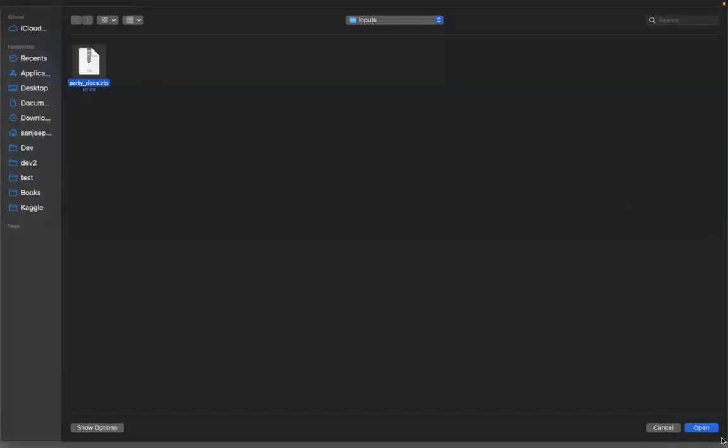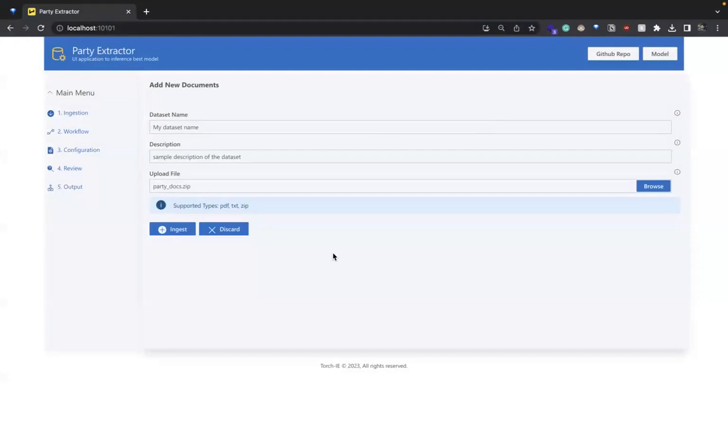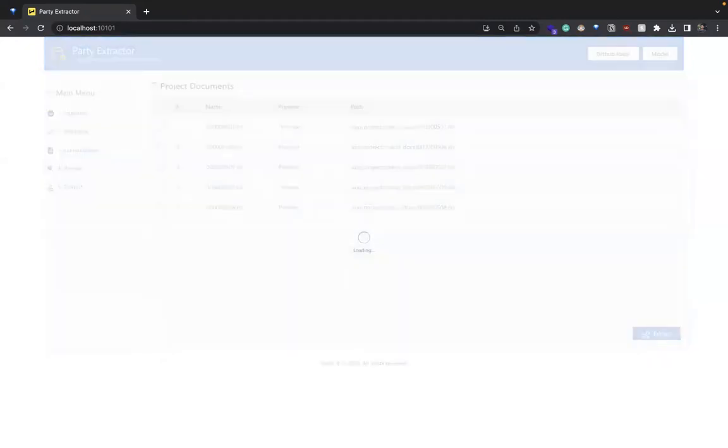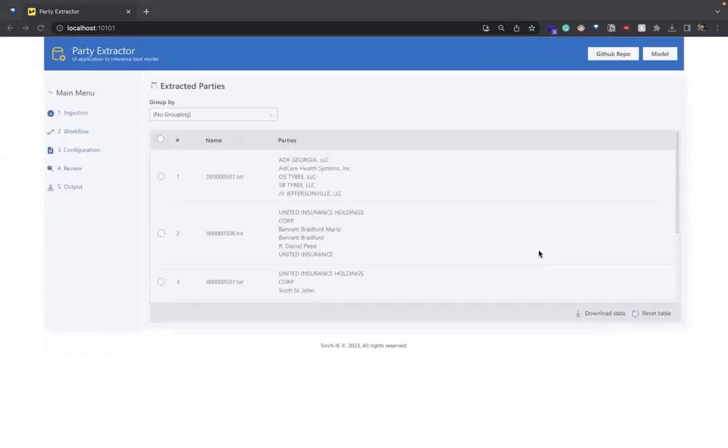You can then upload the dataset using the third input field and click the ingest button to proceed. Once completed, you will be able to see all the documents within the uploaded zip file. To initiate the process, let's click the extract button. This will transmit the documents to the server for analysis and retrieve the predictions. Please note that this step may require some time to complete.